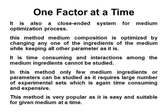The fourth method is one factor at a time. It is also a closed-ended system for the medium optimization process. In this method, optimization of the medium is carried out by changing any one of the ingredients of the medium while keeping all other parameters as they are. This method is useful for studying only a few medium ingredients or parameters, as it requires a large number of experimental sets, which is again time-consuming and expensive.